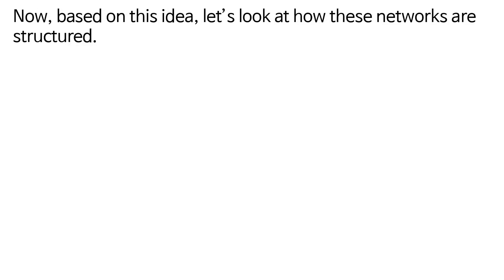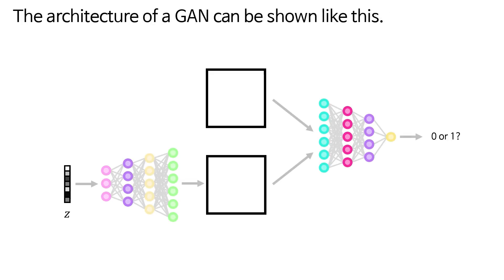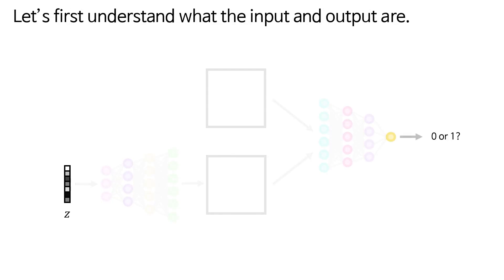Now based on this idea, let's look at how these networks are structured. The architecture of a GAN can be shown like this. Let's first understand what the input and output are.